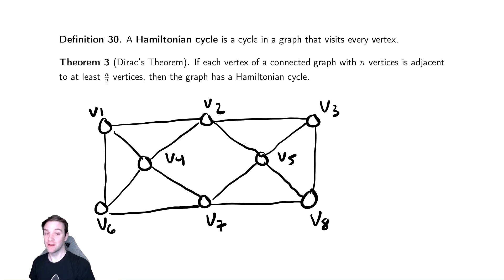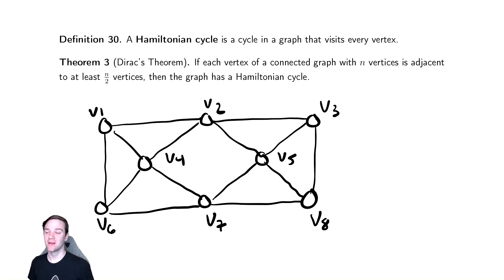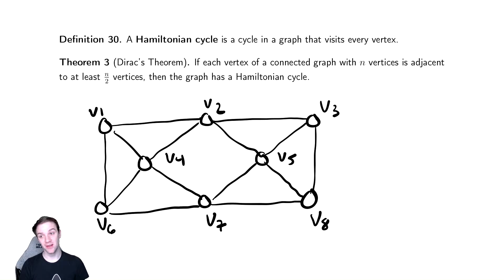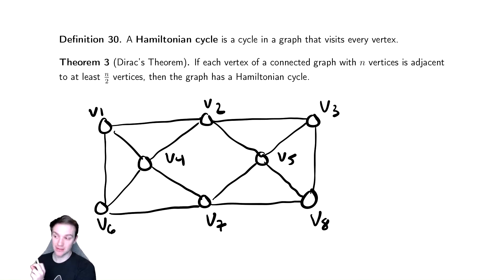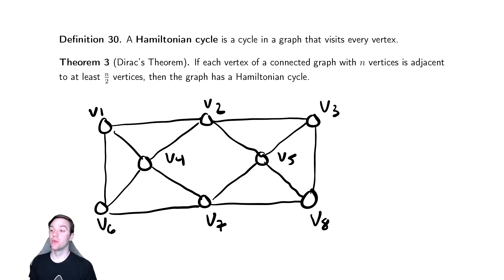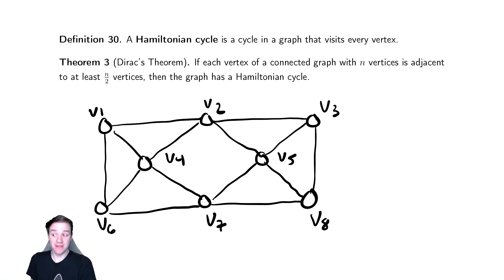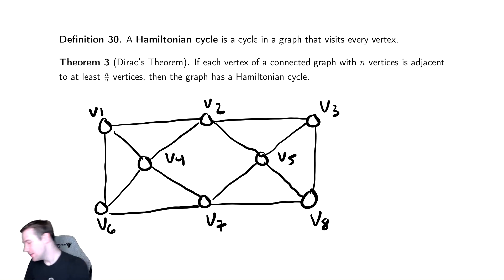Our next and final topic in this series on graphs is the Hamiltonian Cycle — a seemingly similar thing to what we found before, the Eulerian Circuit, where we're trying to touch every vertex in a graph. This seems unbelievably similar, so let's see if we can do that.